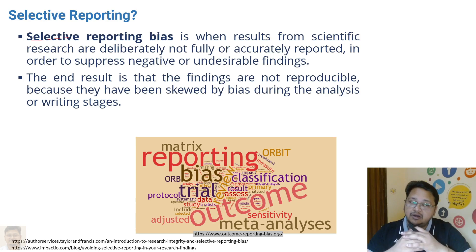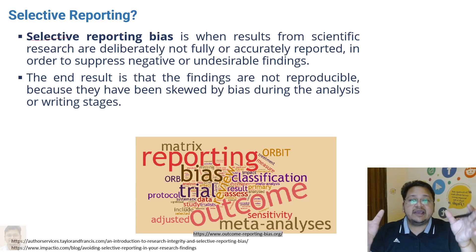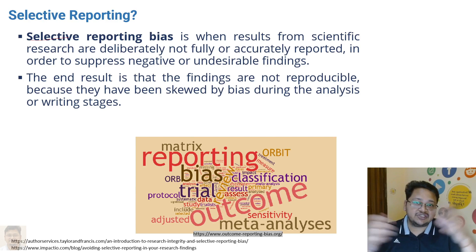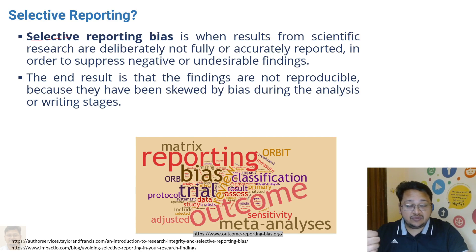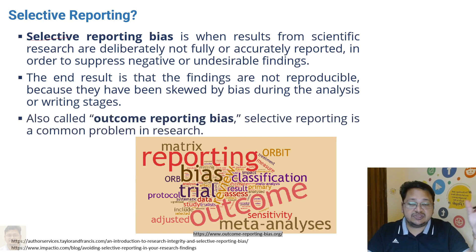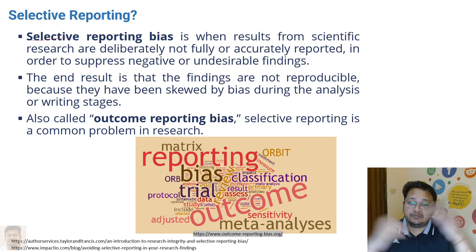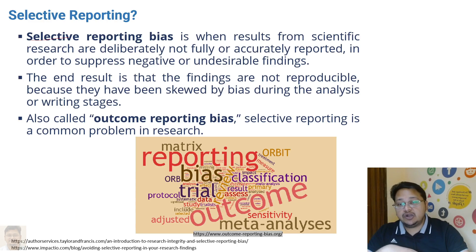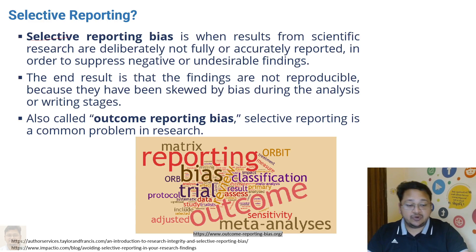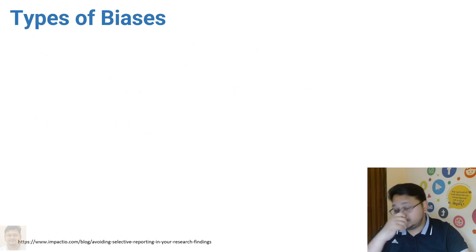When somebody does that, the end result is that the findings are not reproducible, because they have been skewed by bias during the analysis or writing stages. When some result is already in the scientific community domain or has been published and selectively reported, reproducibility may not be possible. This is also called outcome reporting bias, and selective reporting is one of the most common problems in research.